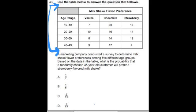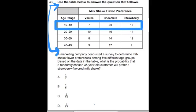Let's read the problem. Use the table below to answer the question that follows. We have a table titled 'Milkshake Flavor Preference' with flavors vanilla, chocolate, strawberry and an age range. Looking at the first row, between ages 10 and 19, 7 people like vanilla, 30 people like chocolate, 15 people like strawberry. It's important to look at each row individually.